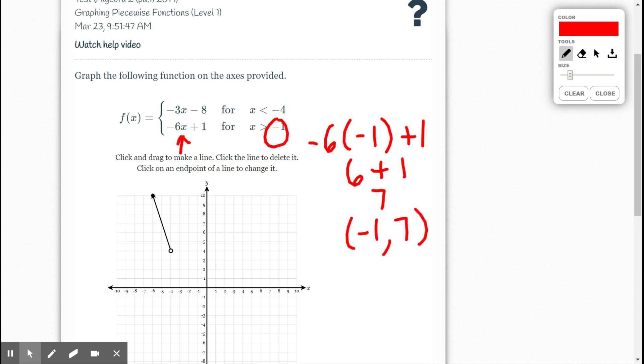So when x is negative 1, f of x is 7. So we're talking about this way up here. And this is true for all x values greater than negative 1. So everything this way.